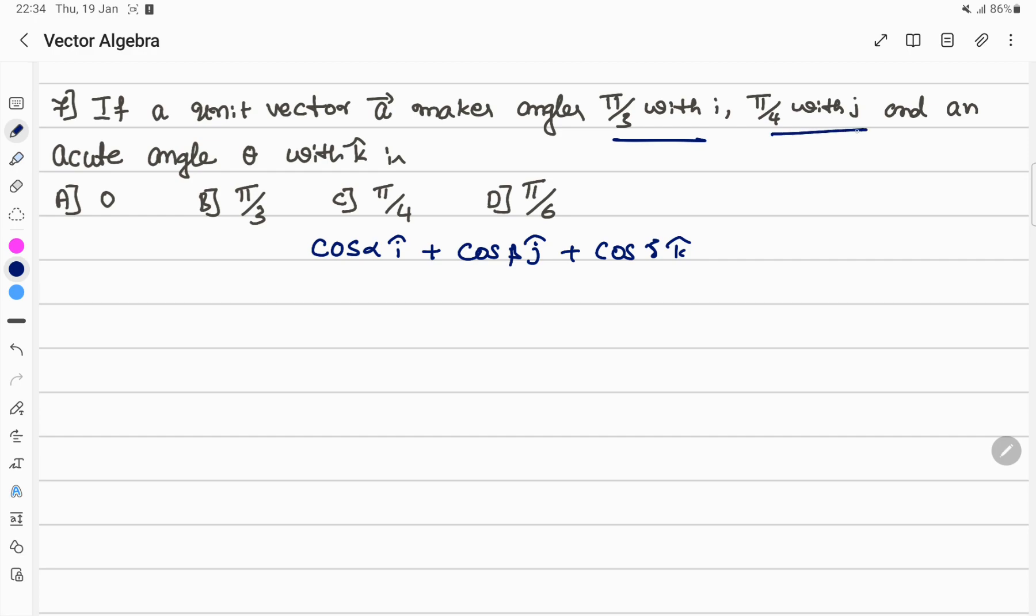So we can write vector A as cos alpha i plus cos beta j plus cos gamma k. These are the direction angles. Put in the values: vector A equals cos pi by 3 i plus cos pi by 4 j plus cos gamma k.